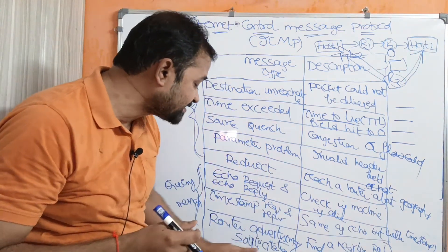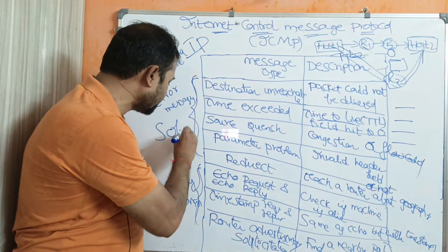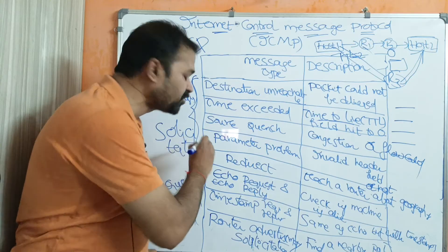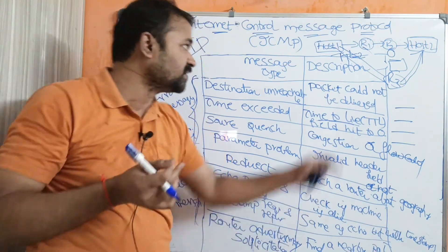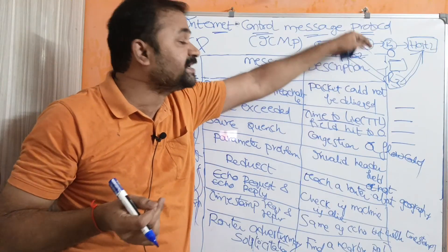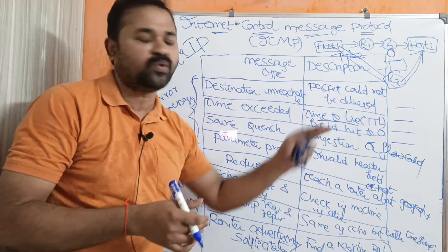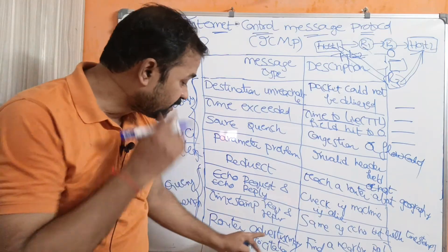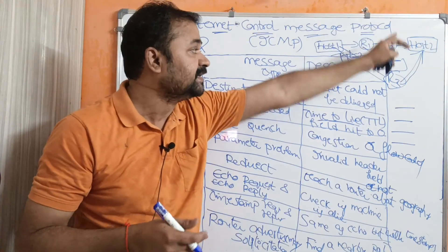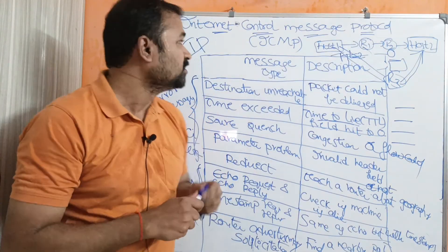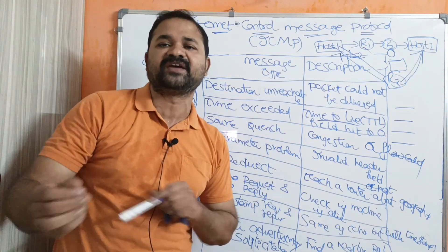The last query message is router advertisement, also called router solicitation. It is mainly useful for a router to provide its routing information to its nearest routers. For example, R1 can use a router advertisement message to share its routing table information with R2. This concludes the discussion on Internet Control Message Protocol, ICMP, in the network layer.